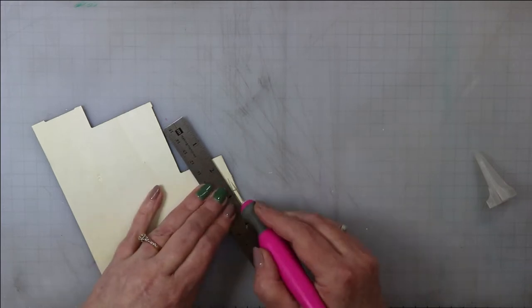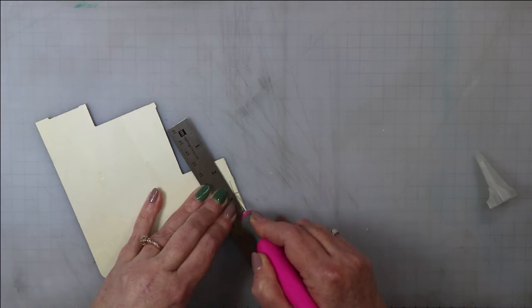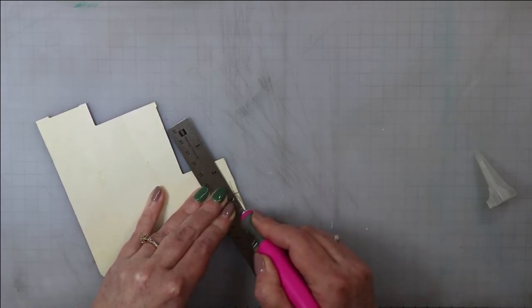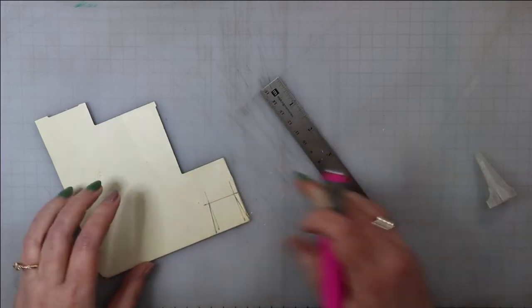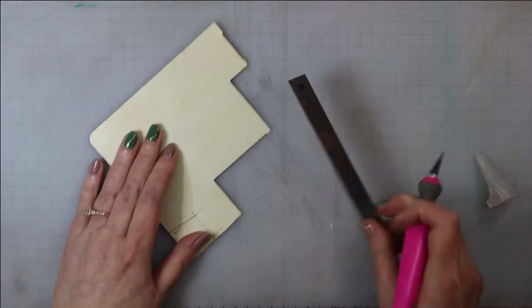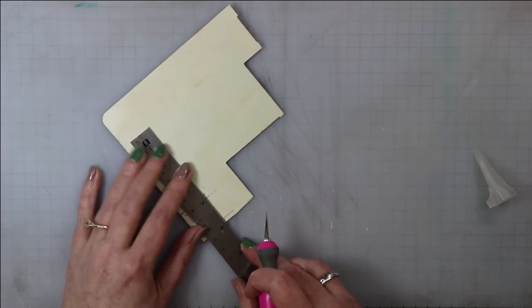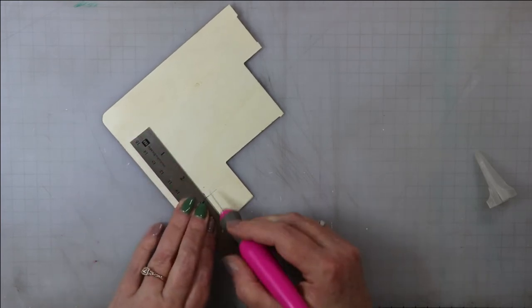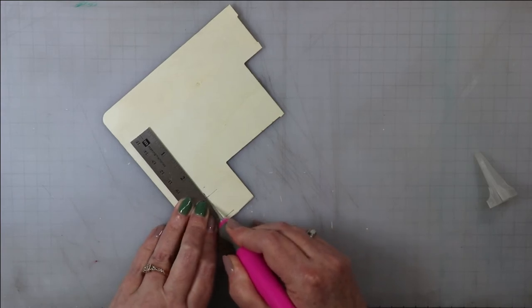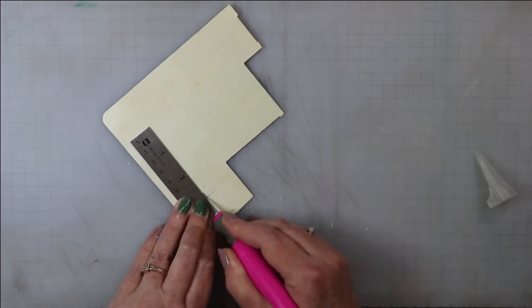So while I was intending for this chair to be for my inch scale diorama, I noticed about halfway through that it was much smaller than that. This is part of the reason I have multiple projects going, because then I can shift gears and say okay, it's not going to work for my big project, I can use it for one of my smaller ones.